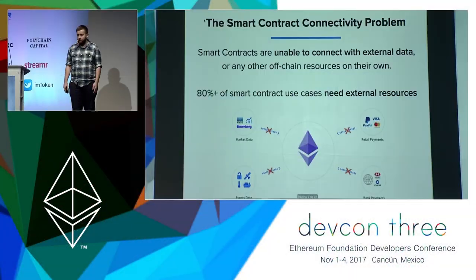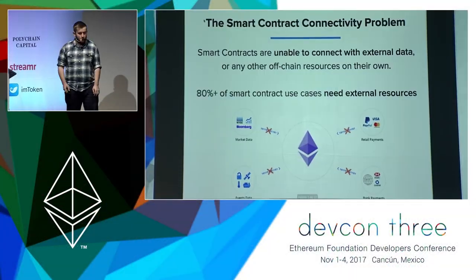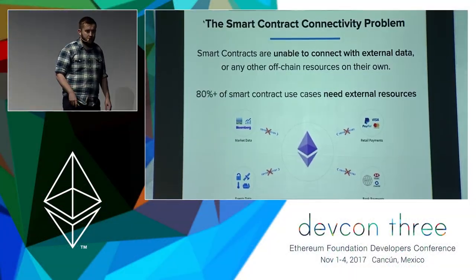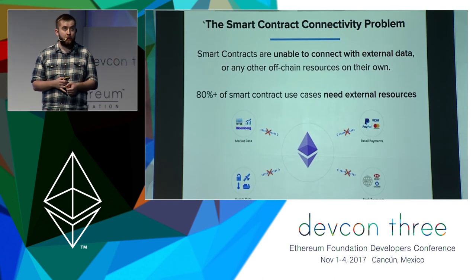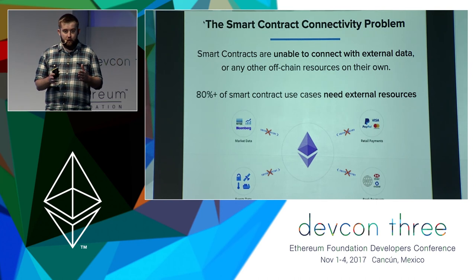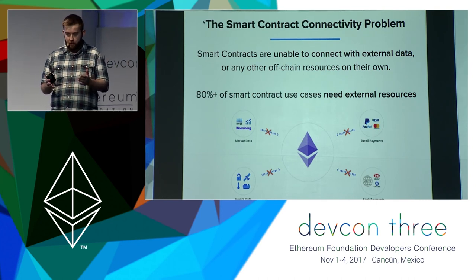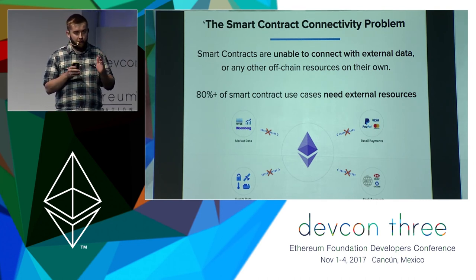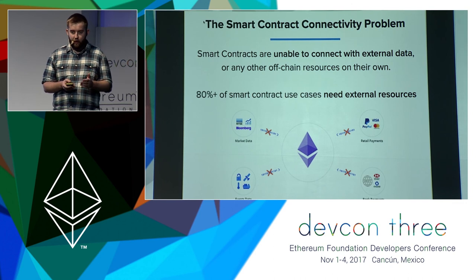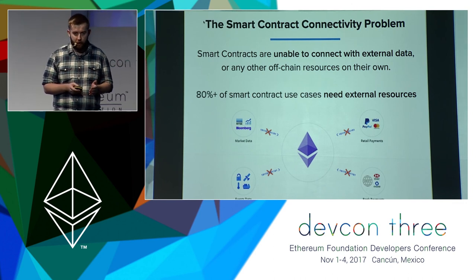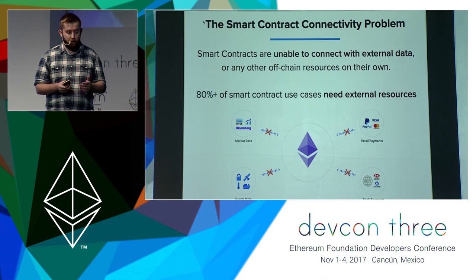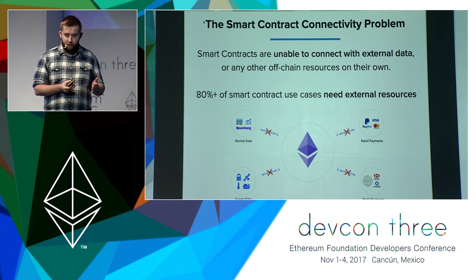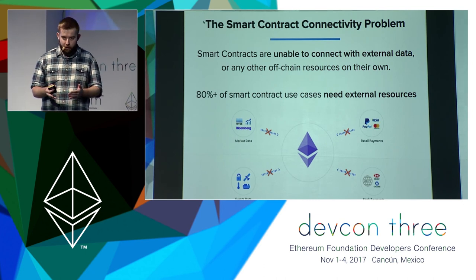Hi everyone. The problem that we're focusing on is one which we think keeps smart contracts limited to tokenization. If the native functionality you have when you start working with a smart contract network is the ability to make tokens, that's the functionality you'll start working with and you'll do a lot of interesting things with it. But the capabilities of smart contracts go far beyond tokenization.